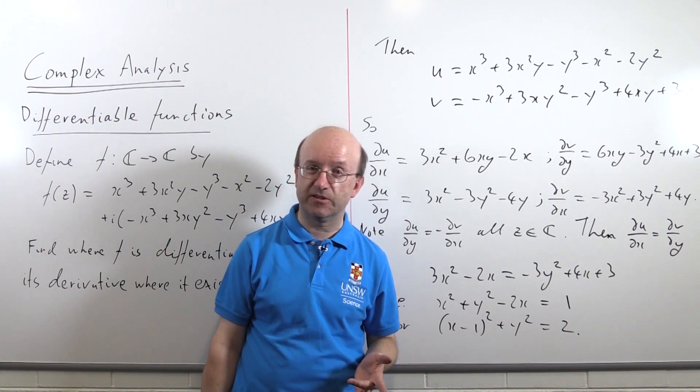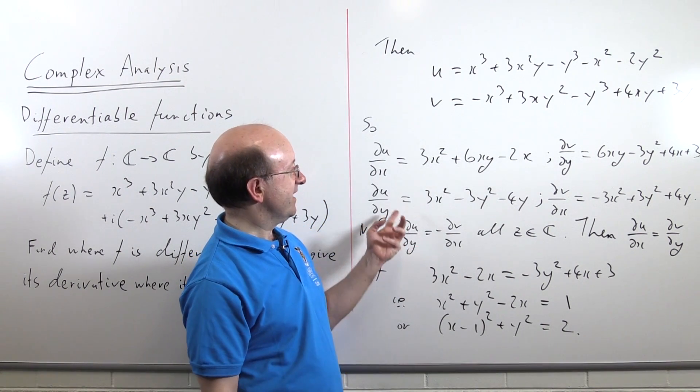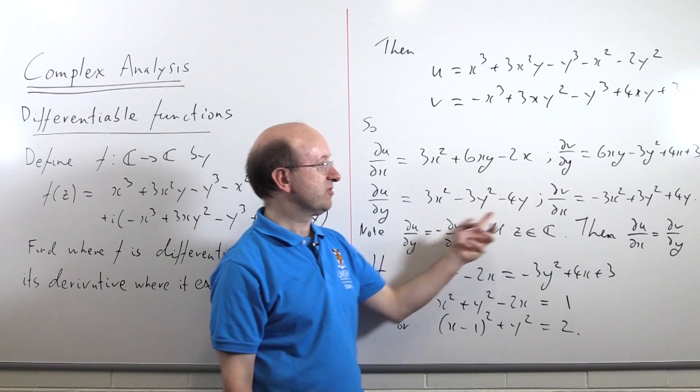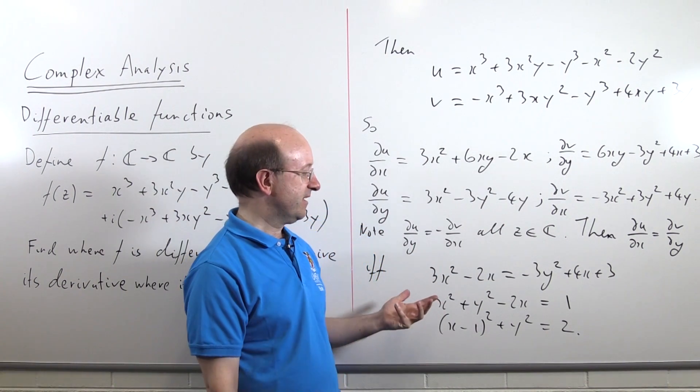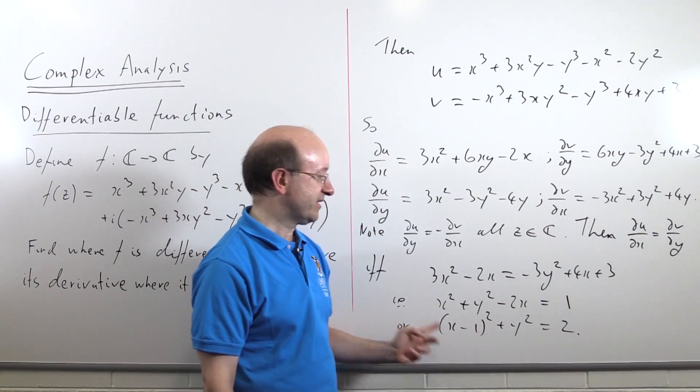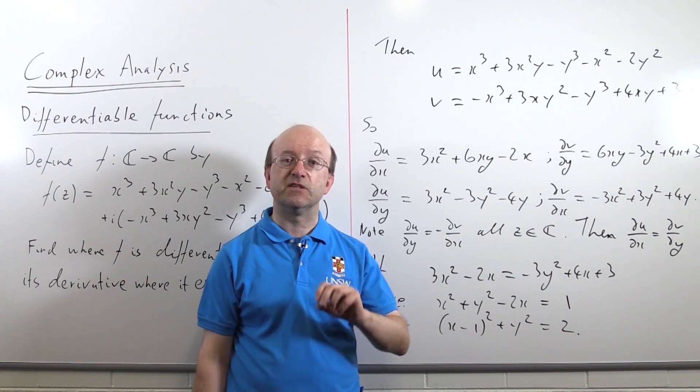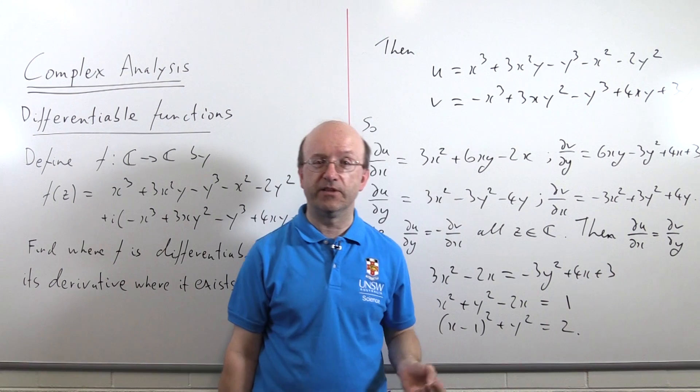Now, that doesn't mean it is differentiable there, remember, not automatically, but clearly all these partial derivatives, well, they're just polynomials. So, they're continuous everywhere. So, in fact, because we've got partial derivatives and the Cauchy-Riemann equations are satisfied on this circle, this function, in fact, is differentiable on this circle and only on this circle.